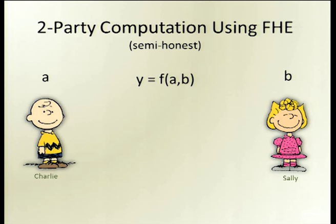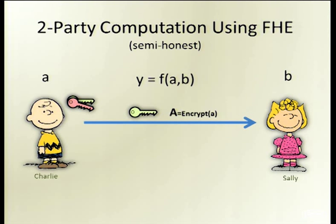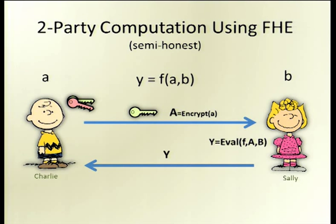Fully homomorphic encryption provides a really nice and simple template for secure two-party computation. Charlie creates the keys, sends the public key together with encryption of his input to Sally. Sally encrypts her input and then homomorphically evaluates the function on the encrypted inputs, gets an evaluated ciphertext Y, sends it back to Charlie who has the decryption key and can decrypt and learn the result. That's the whole protocol.